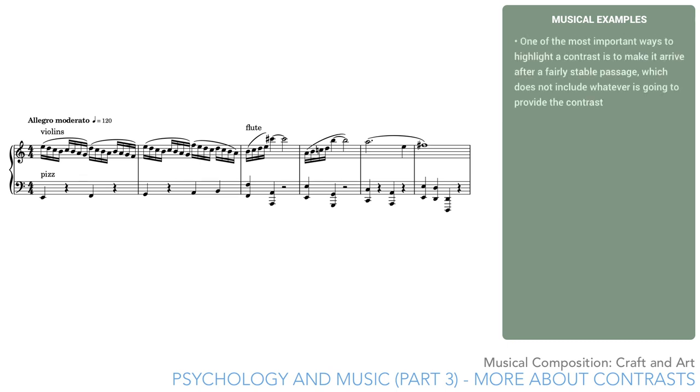These examples show us how one of the most important ways to highlight a contrast is to make it arrive after a fairly stable passage, which does not include whatever is going to provide the contrast. So if you're planning the arrival of an important new musical idea, you should plan ahead so that whatever is most distinctive about it isn't already present in the music right before.